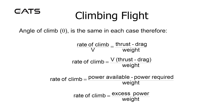Rearranging the formula, rate of climb equals V multiplied by (thrust minus drag) over weight. The rate of climb is therefore equal to power available minus power required over weight — another way of saying this is excess power over weight.